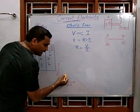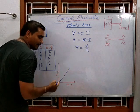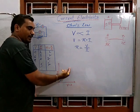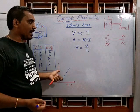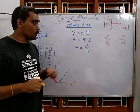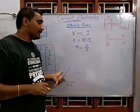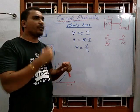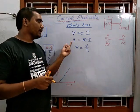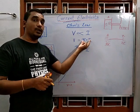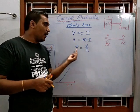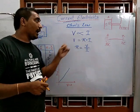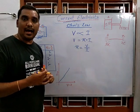The V-I graph for Ohm's Law will always be a straight line — a linear graph. From this constant R, we derive three formulas: V is equal to I into R, or R is equal to V by I, or I is equal to V by R.